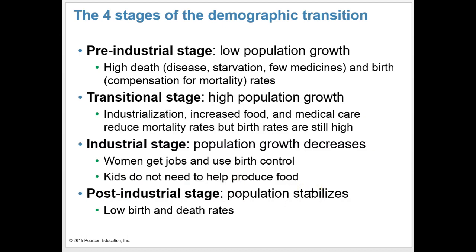The four stages of demographic transition are: the pre-industrial stage with low population growth and high death rates due to disease, starvation, and few medicines; the transitional stage with higher population growth as industrialization, increased food, and medical care reduce mortality rates but birth rates remain high; the industrial stage where population growth decreases as women get jobs and birth control becomes more common and kids aren't needed on farms; and the post-industrial stage where the population stabilizes with low births and low death rates.